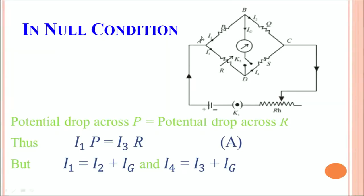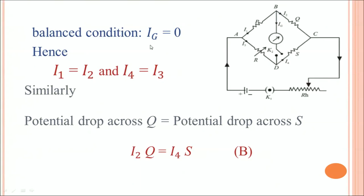From the circuit diagram, by Kirchhoff's first rule: I1 = I2 + IG and I4 = I3 + IG. In the balanced condition, since there is no current through the galvanometer, IG = 0. So I1 = I2 and I4 = I3. Similarly, when VB equals VD, the potential drop across Q must equal the potential drop across S, giving us I2·Q = I4·S.